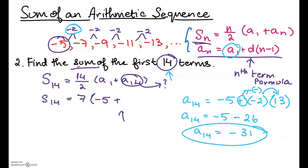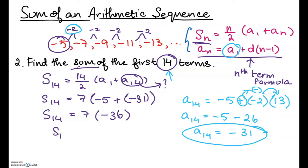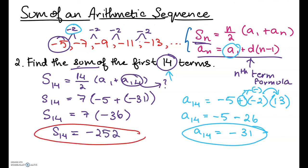Substituting back, S of 14 equals 7 times (-5 plus -31), which is 7 times -36. Simplifying, S of 14 equals -252. So the sum of the first 14 terms of this sequence is -252 — that's our final answer.